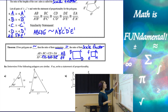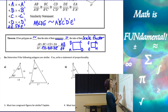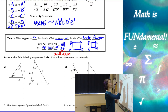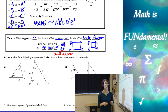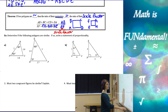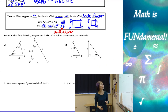Make a note of that. The scale factor is any ratio of two corresponding sides. Now let's look at some examples to determine if the following polygons are similar.